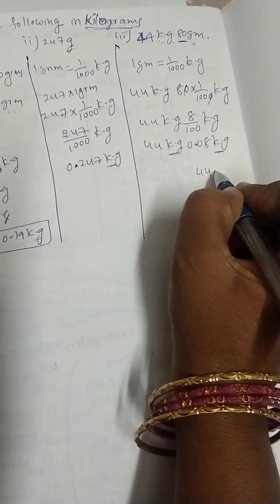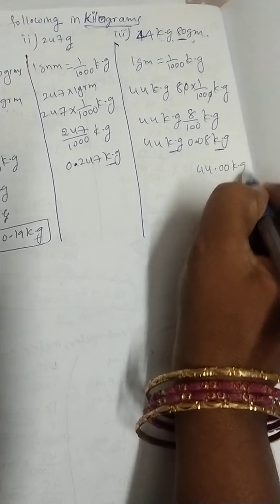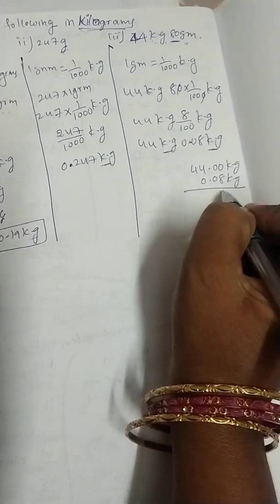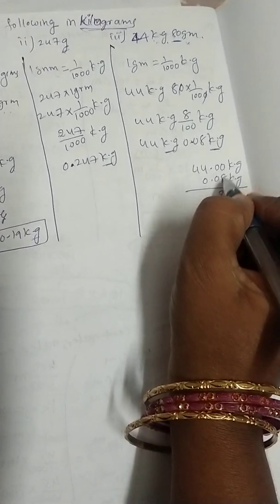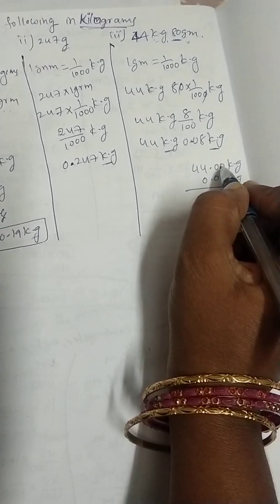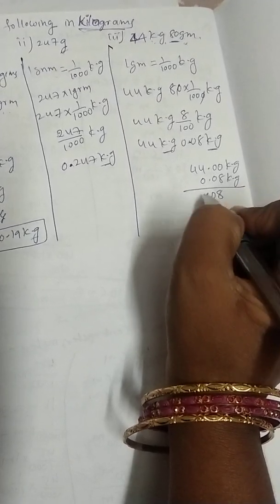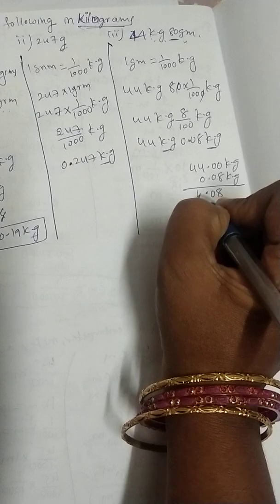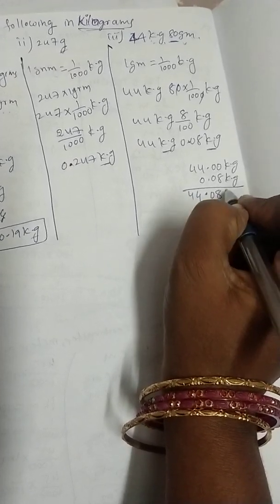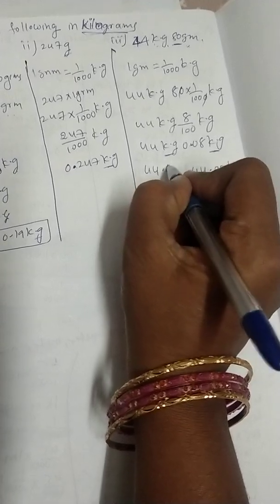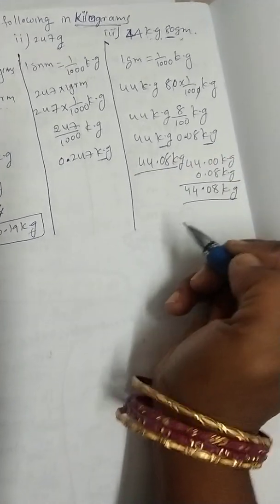44.00 we can write, here 0.08 kg we can write. Now, 0 plus 8, 8. 0 plus 0, 0. 0.0 plus 4, 4. 4, 4 kg. Means that 44.08 kg we got kilograms.